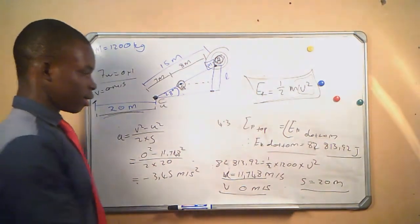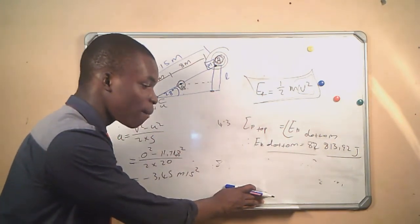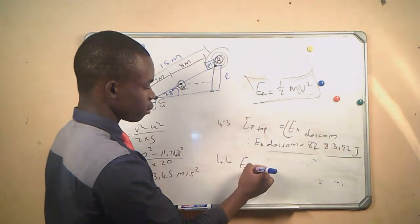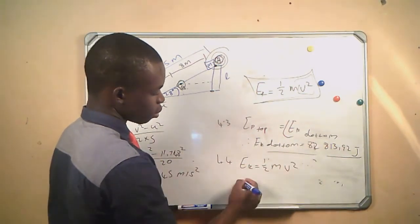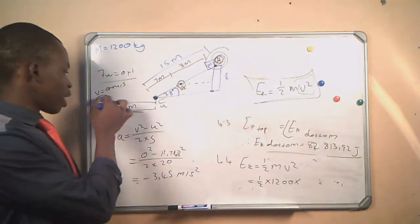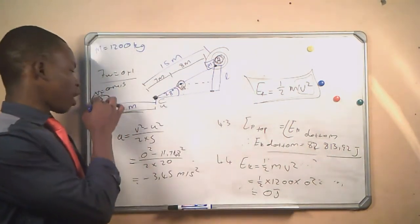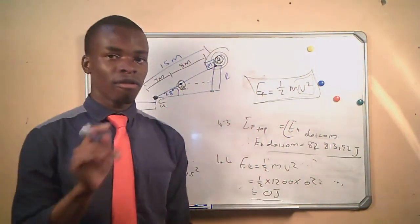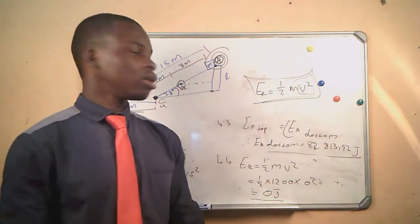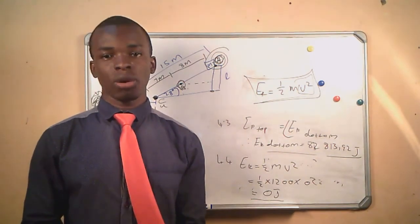For the fourth question, we determine the kinetic energy after moving 20 meters on the horizontal road. EK equals half mv squared: half times 1200 times zero squared, which gives zero joules. The object is no longer moving at this position, therefore it possesses no velocity, and since kinetic energy is the energy a body possesses due to velocity, our kinetic energy is zero. That is the end of our question and the end of our lesson — I will see you in the next lesson.